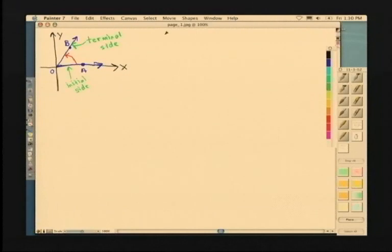Angles for which rotation is considered are called directed angles. Angles for which the rotation is counterclockwise are positive angles, and angles formed by rotating clockwise are negative. Let's look at some examples.